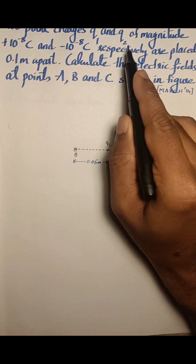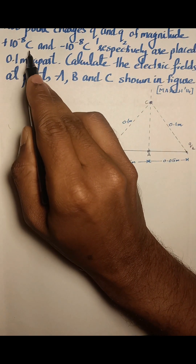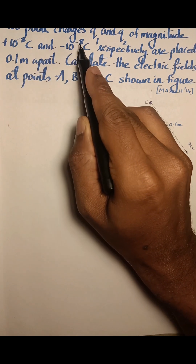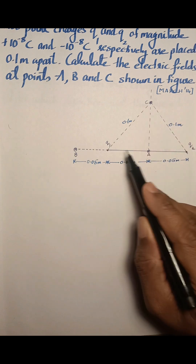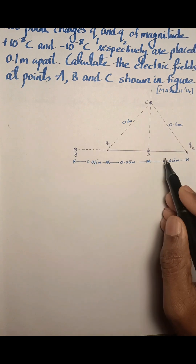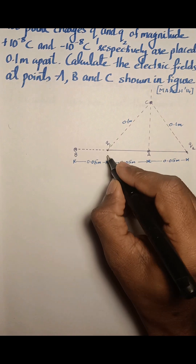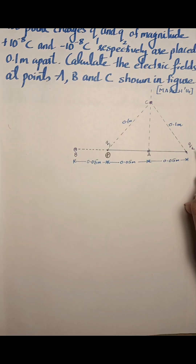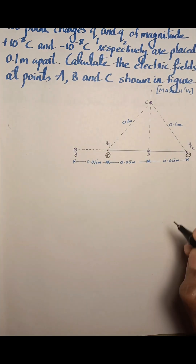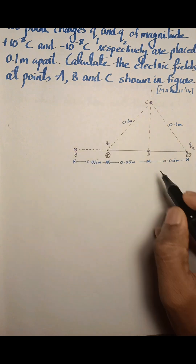Two point charges Q1 and Q2 of magnitude 10 raised to minus 8 coulomb and minus 10 raised to minus 8 coulomb respectively are placed 0.1 meter apart. As shown in the figure, Q1 is positive 10 raised to minus 8 coulomb and Q2 is negative 10 raised to minus 8 coulomb. We need to find the electric field at points A, B, and C.